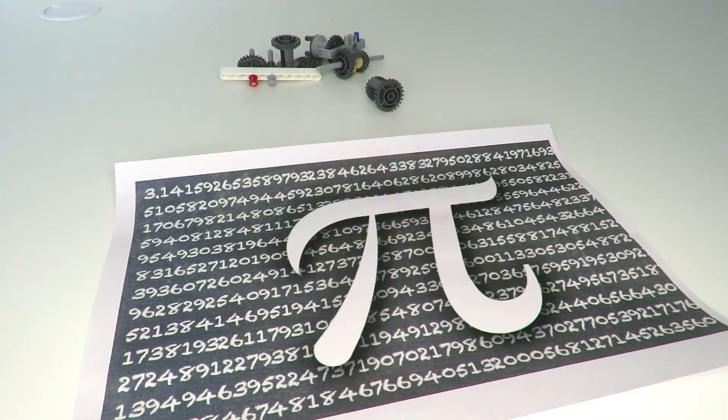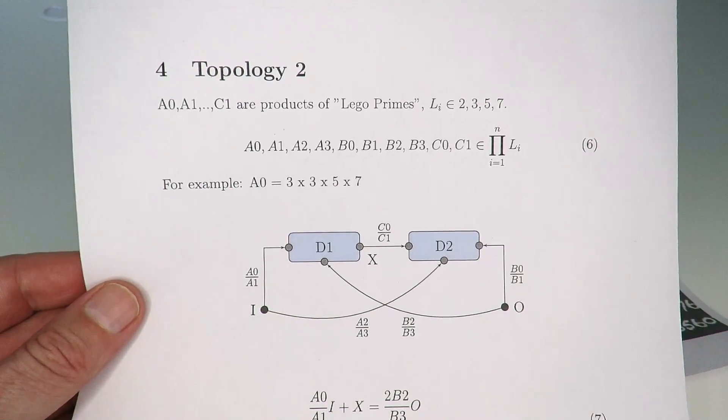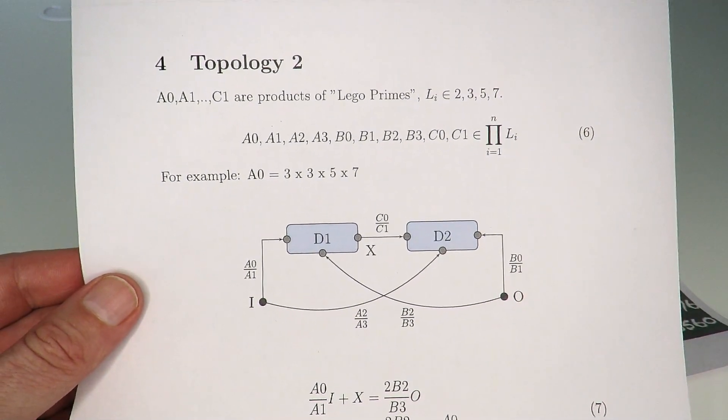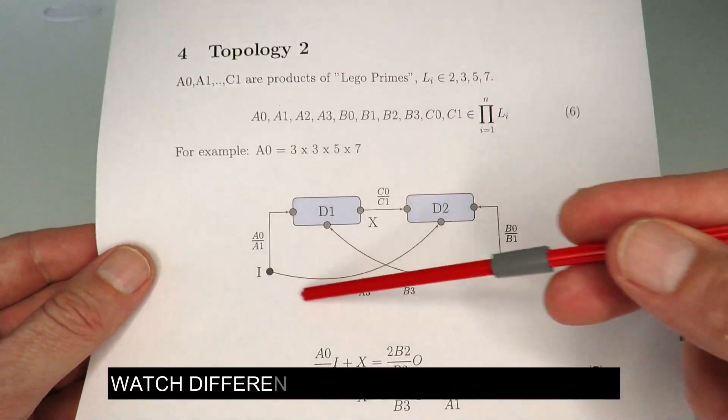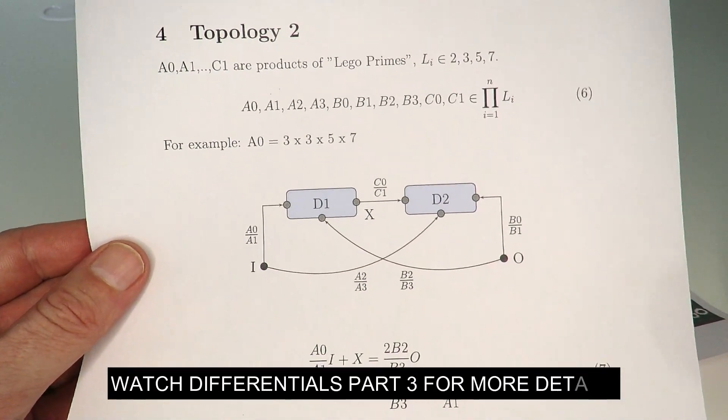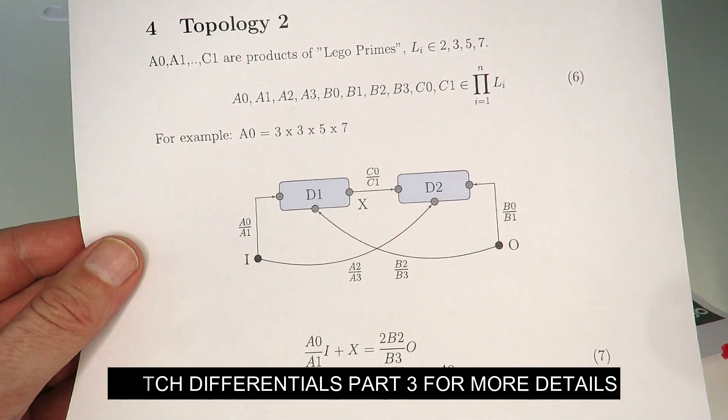So the way I've done that is by using two differentials. In one of my past videos I presented a mechanism for creating an n to p gearing ratio using differentials, and I've presented this particular topology here that I'm going to be using today. Probably the best thing to do would be to watch my differentials part three for similar details on how that works in terms of math.